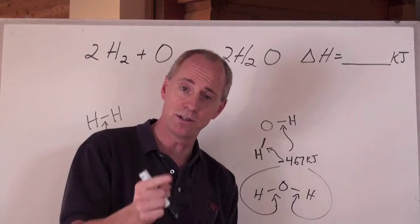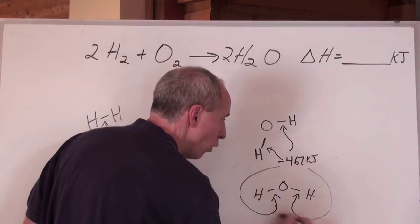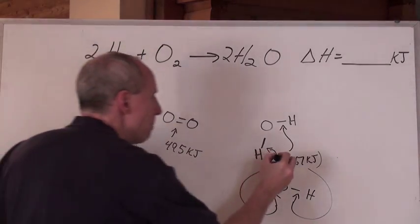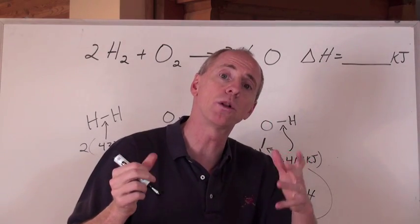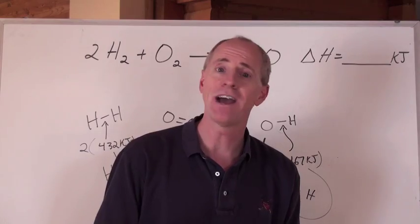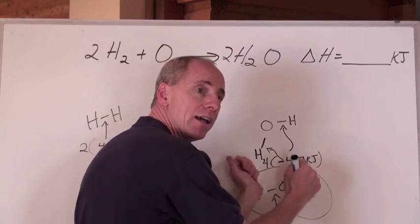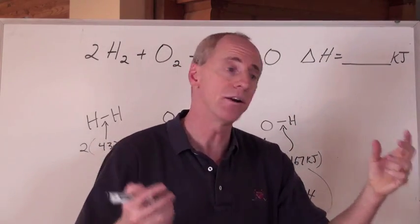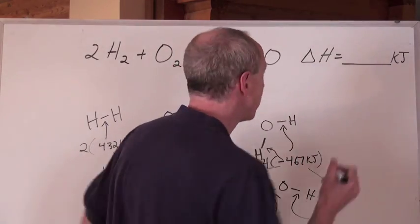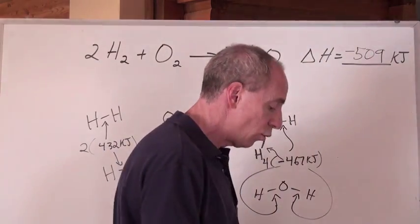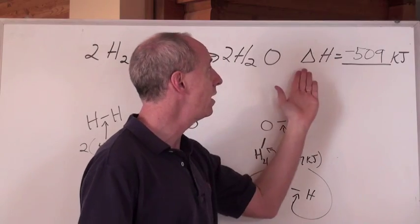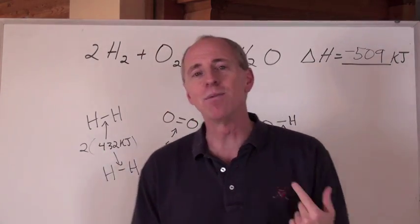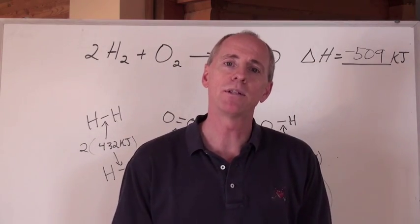So it's negative 467 kilojoules, and there are four of those bonds forming, so it's that number times 4. Take 432 times 2 and add 495 — those are positive — then add negative 467 times 4. The delta H reflects whether more energy was released or required to make this reaction happen. When you add all these together, you get negative 509 kilojoules, which means the net energy in this reaction is a loss of 509 kilojoules. More energy is actually produced than required. So use your table of bond energies to calculate delta H's.